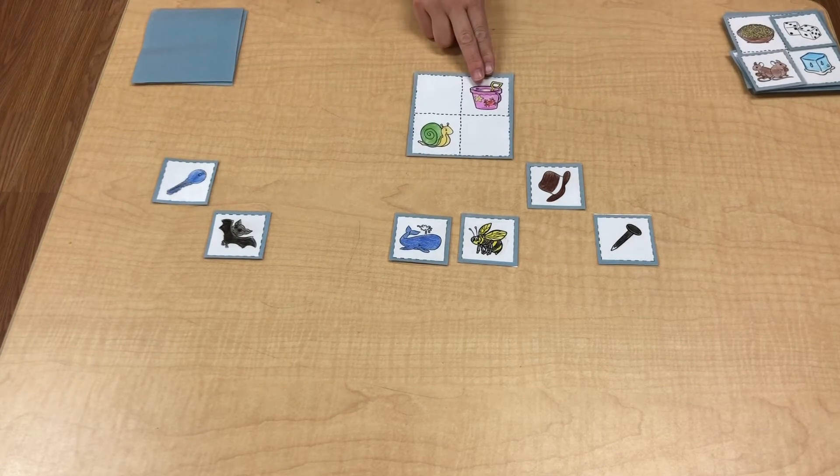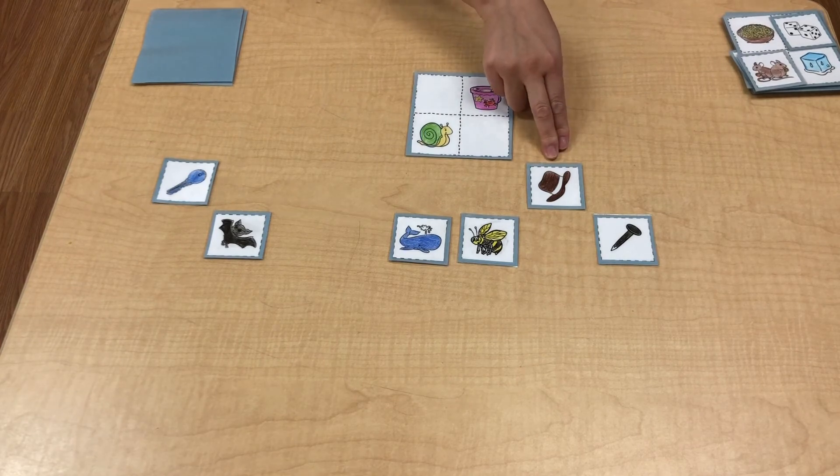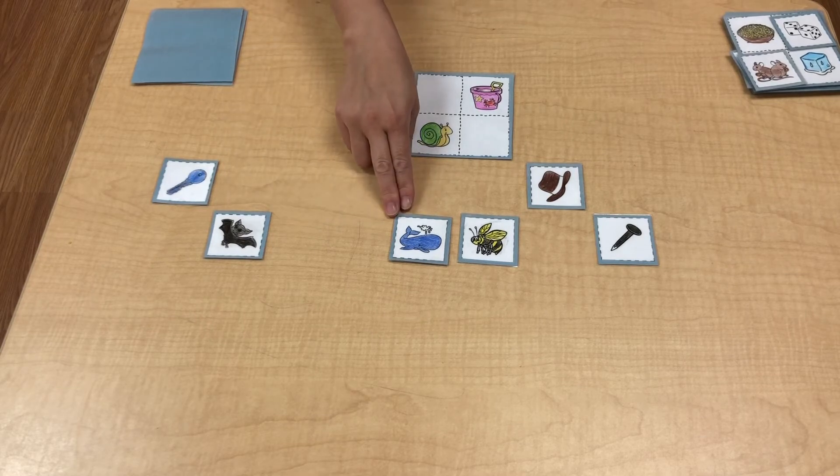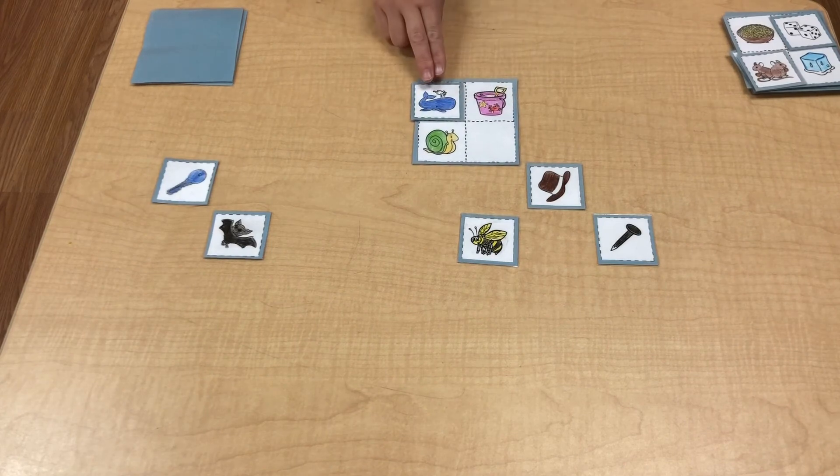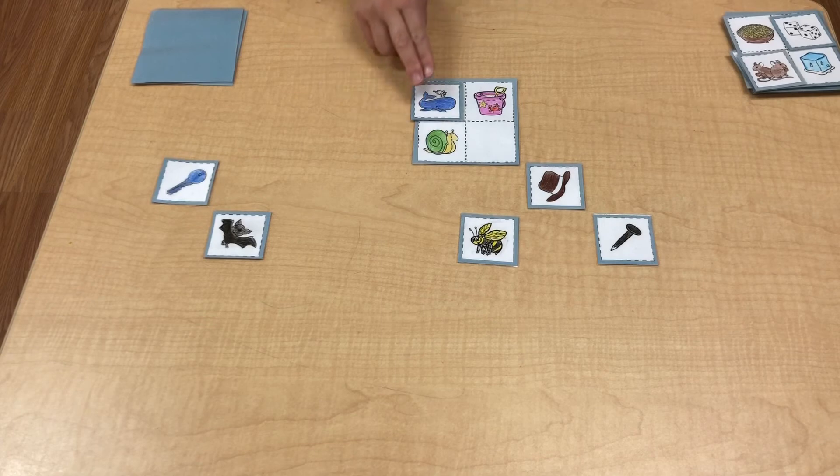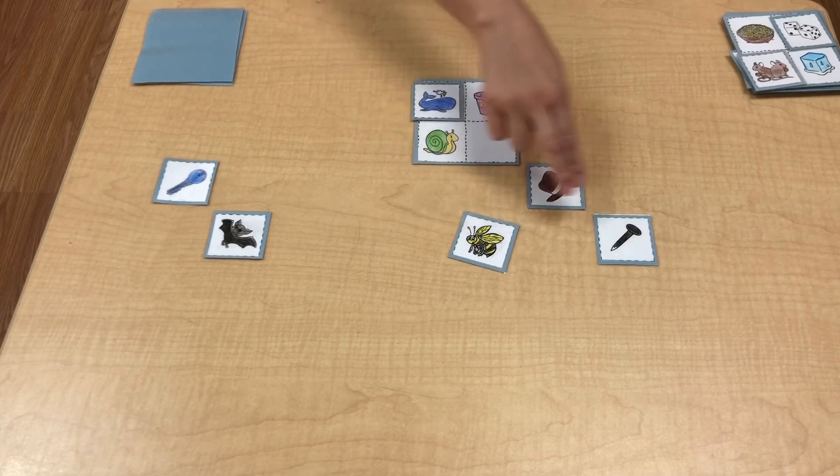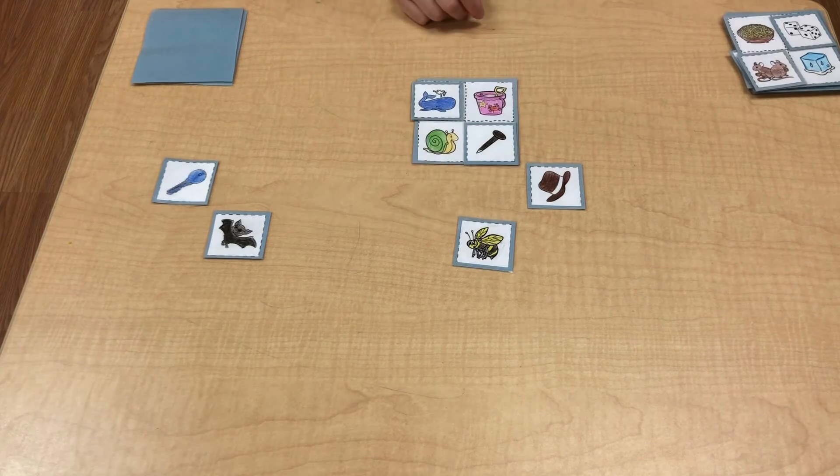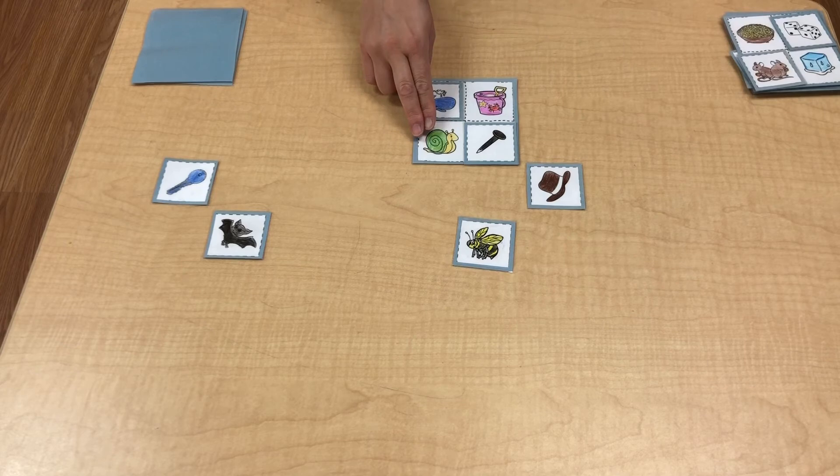Pale. Snail. Key. No. Hat. No. Bat. No. Whale. Yes. Pale. Whale. Snail. Whale. Bee. No. Nail. Yes. Pale. Nail. Snail. Nail.